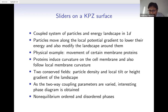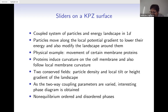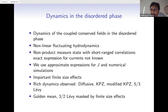In our model there are two conserved fields. One is the particle density — particles move on the landscape but do not get created or annihilated, so local density is conserved. The landscape dynamics are such that the local height gradient of the landscape is also conserved. So I have two conserved fields whose time evolutions are coupled to each other. As I vary the two-way coupling parameters, we get an interesting phase diagram with non-equilibrium ordered and disordered phases. I will mainly focus on the disordered phase and its dynamics.